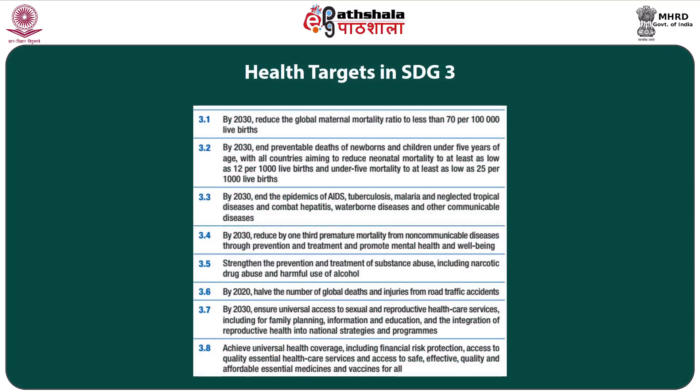Looking at the specific health-related targets: Target 3.1 talks about reducing the global maternal mortality ratio to less than 70 per 100,000 by 2030. Target 3.2 talks about ending preventable deaths of newborns and children under 5 years of age, with all countries aiming to reduce neonatal mortality to at least as low as 12 per 1000 live births and under-5 mortality to at least 25 per 1000 live births. Target 3.3 talks about ending the epidemics of AIDS, tuberculosis, malaria and neglected tropical diseases, and combating hepatitis, waterborne diseases and other communicable diseases by 2030.